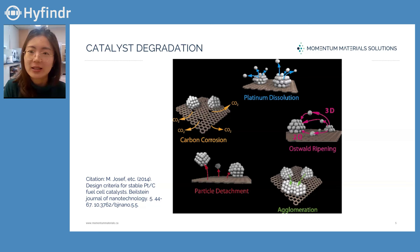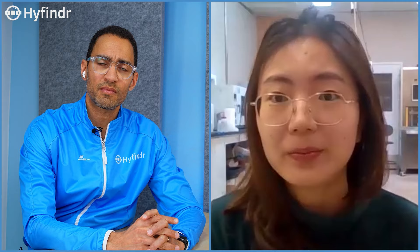Carbon corrosion reactions are especially prominent during the startup and shutdown of the systems. It will lead to further detachment of the platinum nanoparticles because of the weakened carbon-platinum bond.